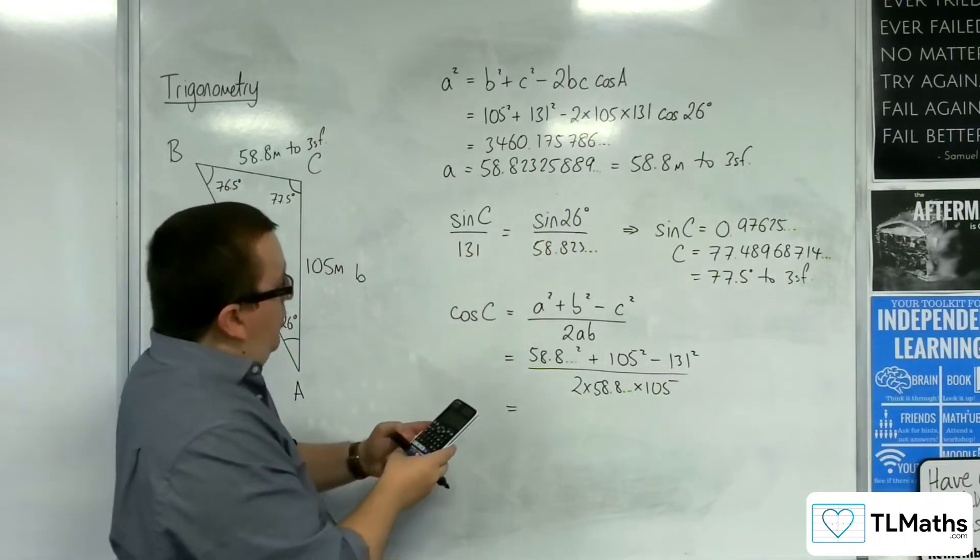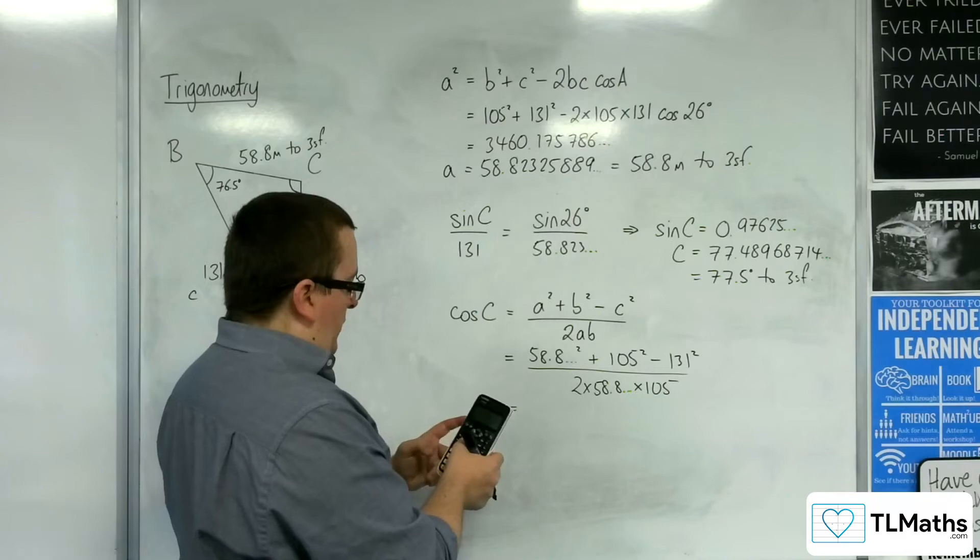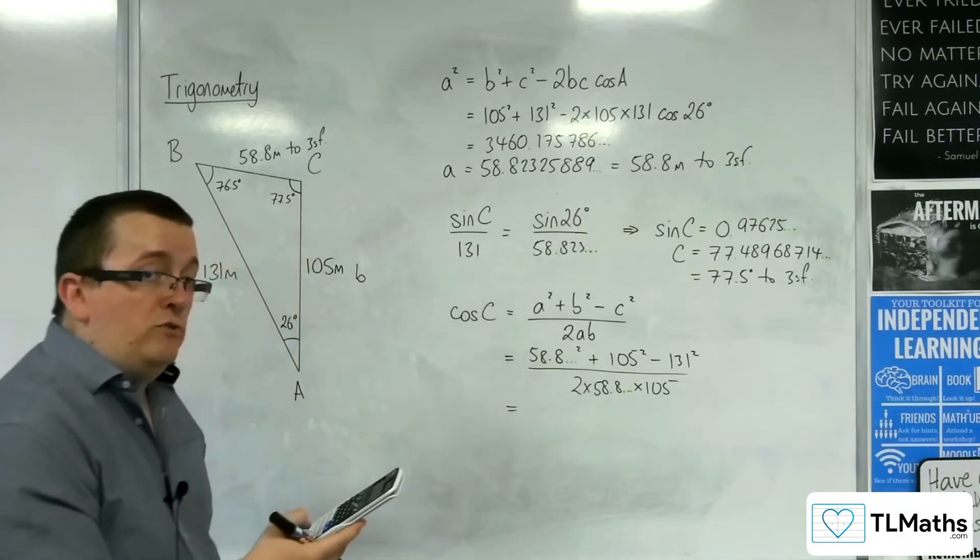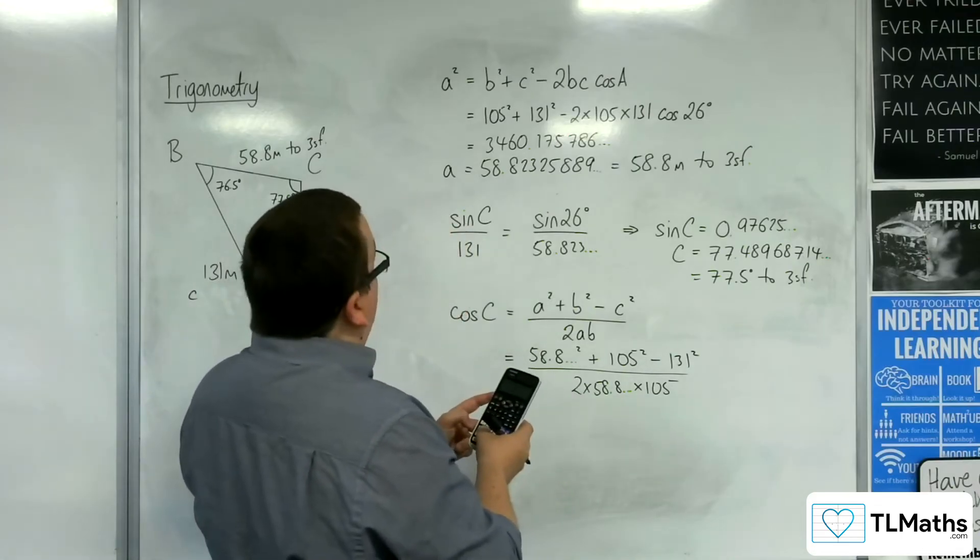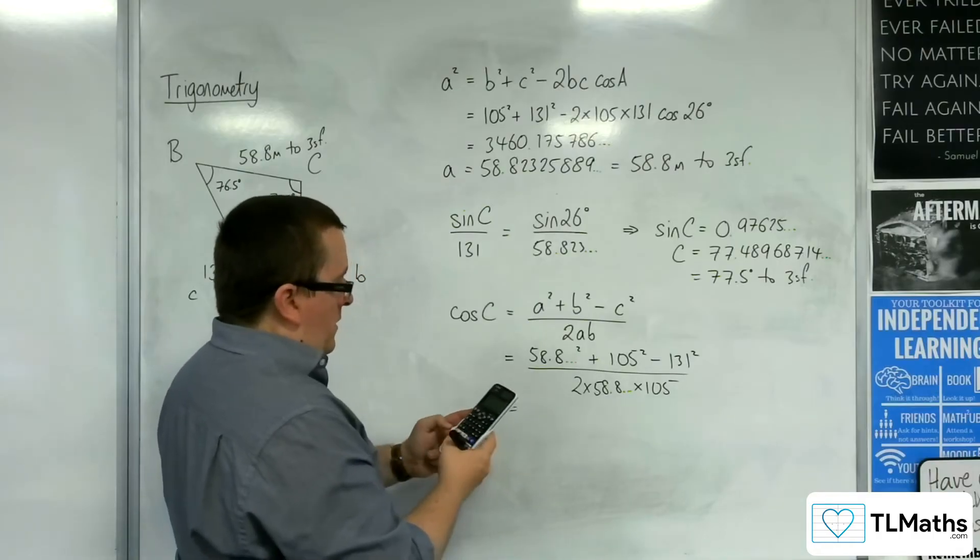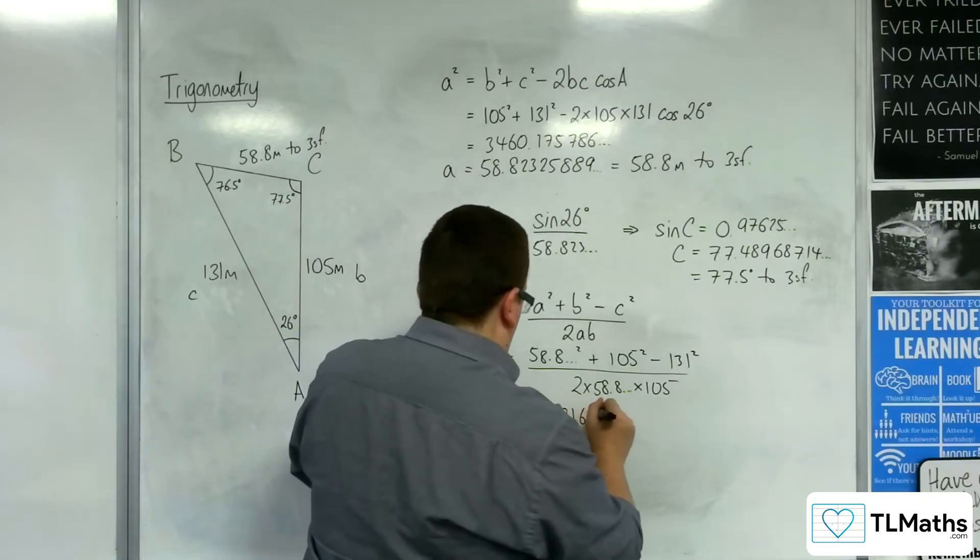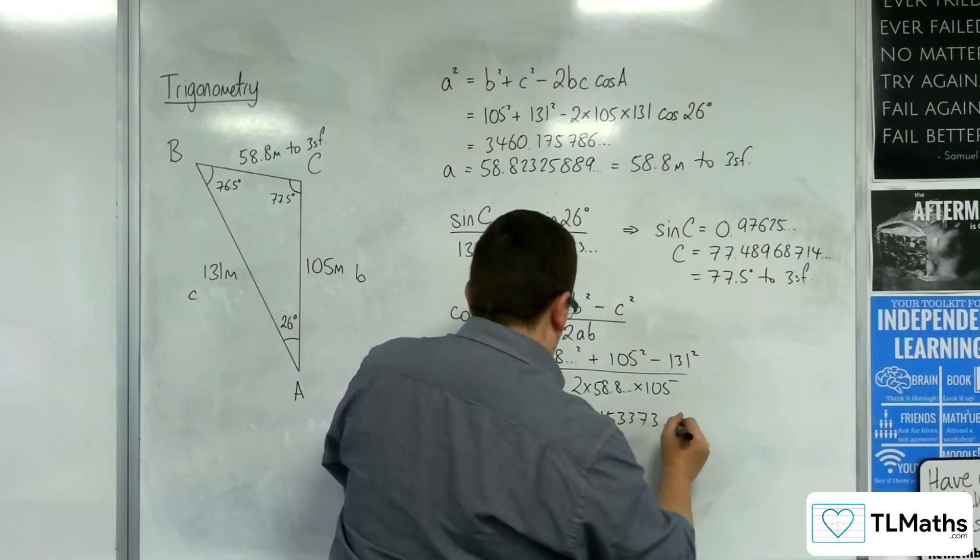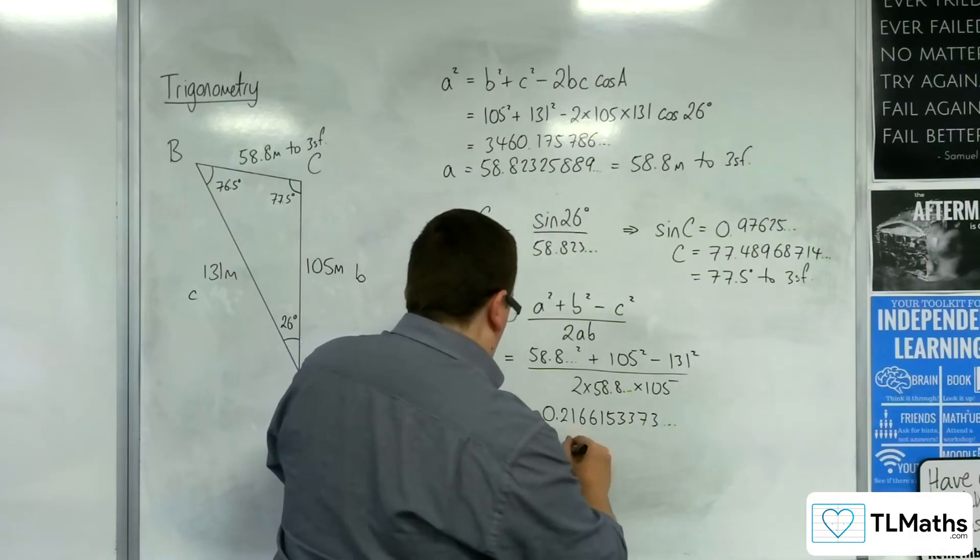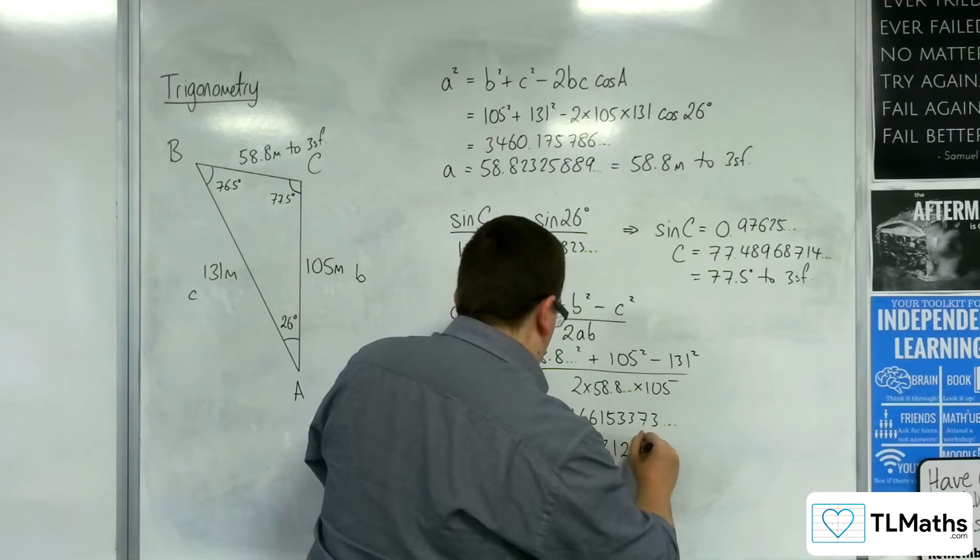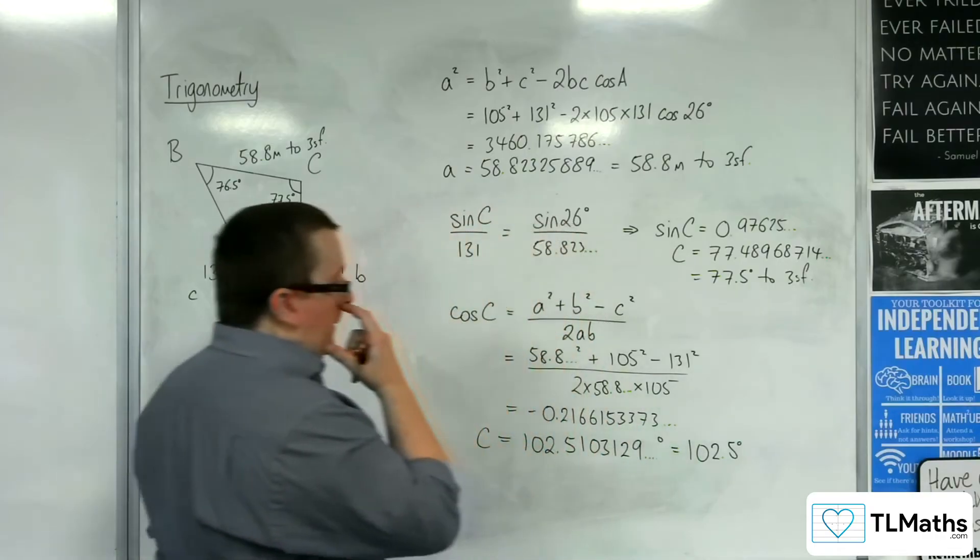So let's try that out. 58.82325889 squared, plus 105 squared, take away 131 squared. So, I've got minus 2675. Divide that by 2 times 58.82325889 times by 105. And we get minus 0.2166153373. So, when I inverse cosine that, I get 102.5103129. So, 102.5 degrees to one decimal place.